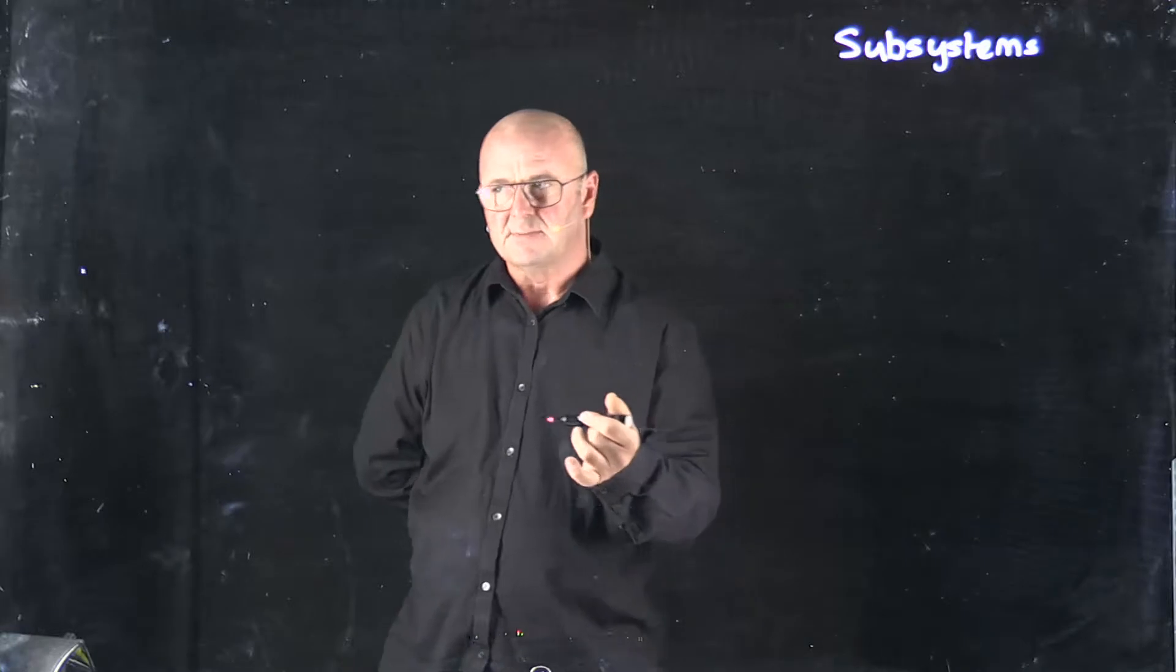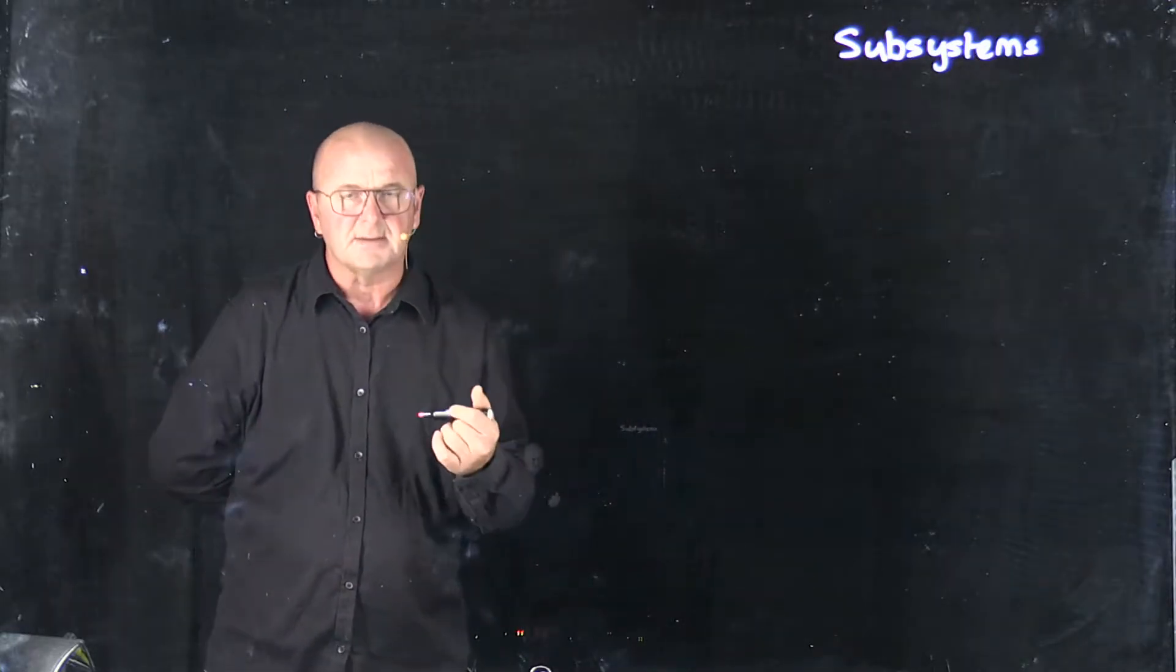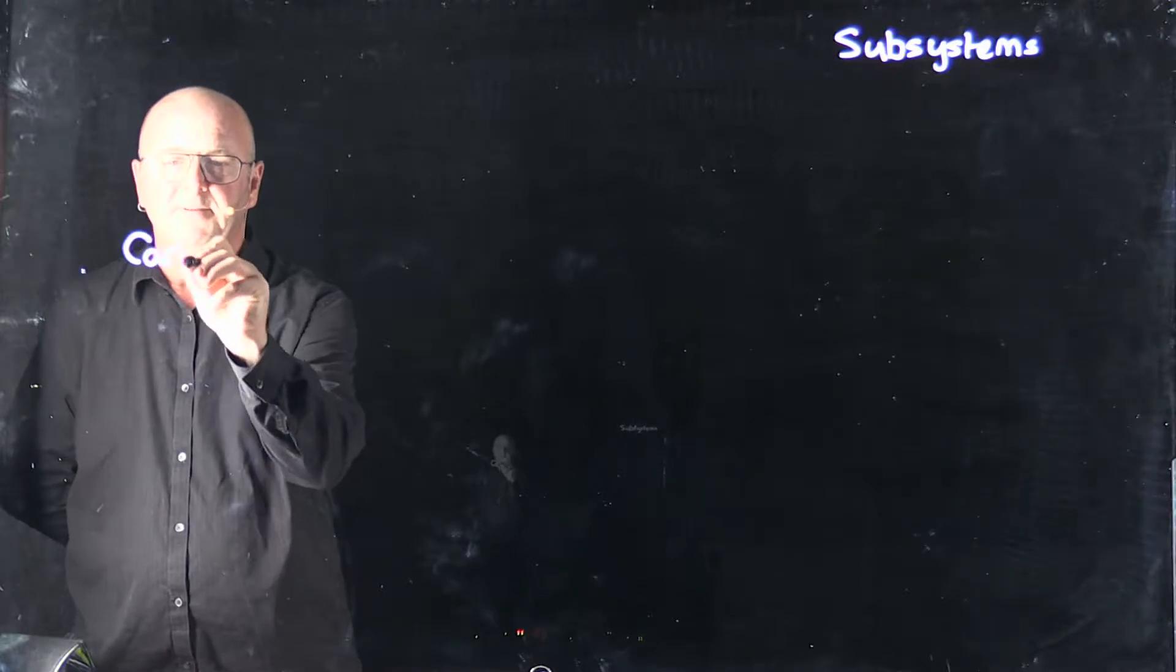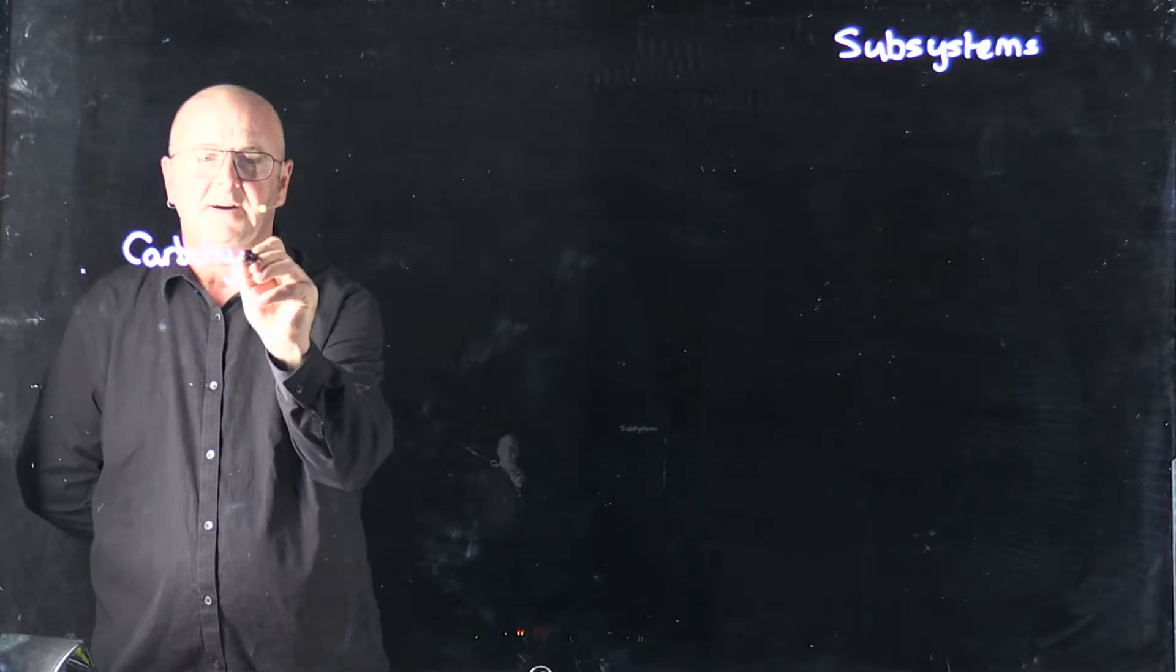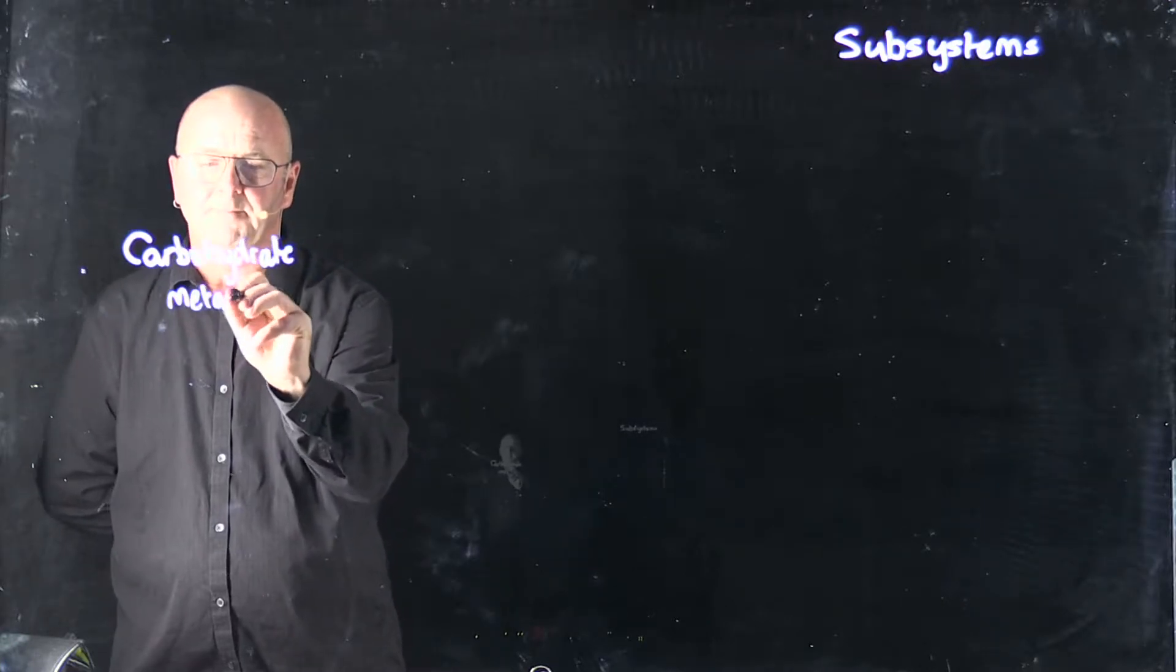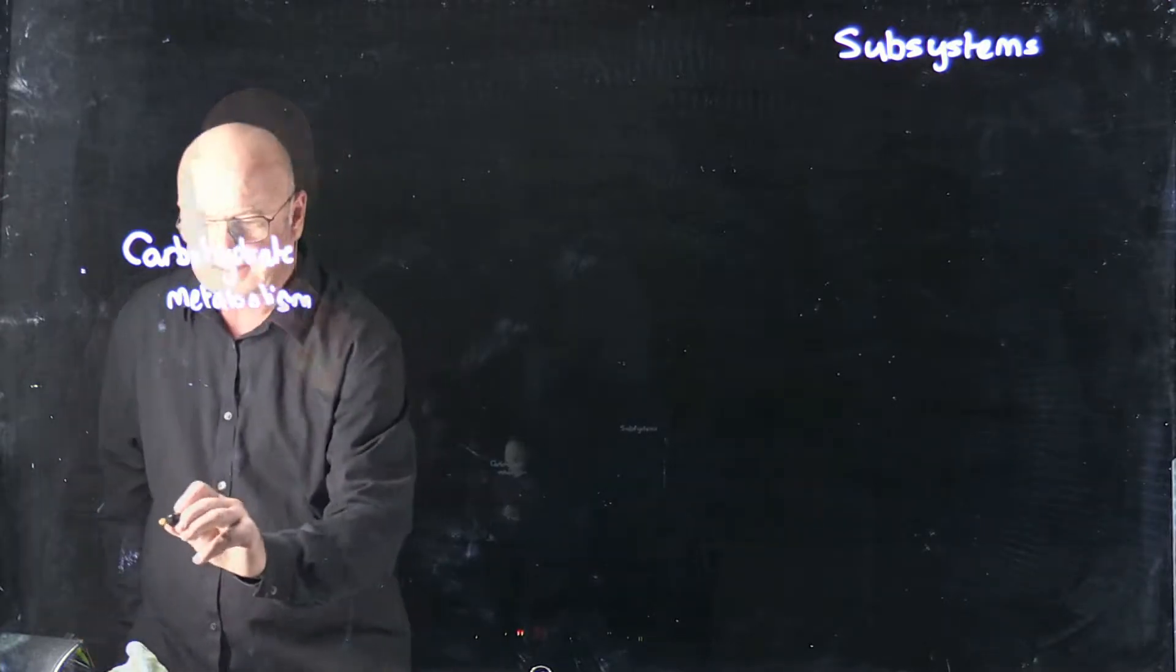The hierarchy has three levels, and let me just give you a simple example. So the very top level might be carbohydrate metabolism, and we would call this level zero.